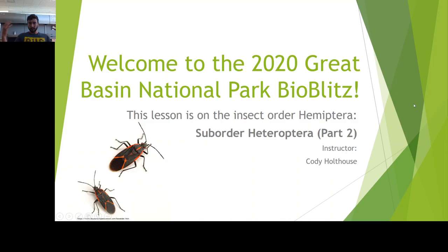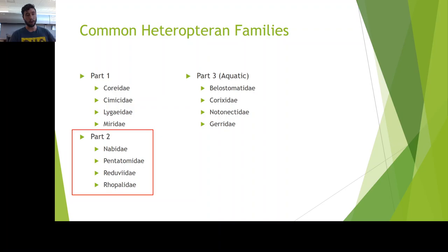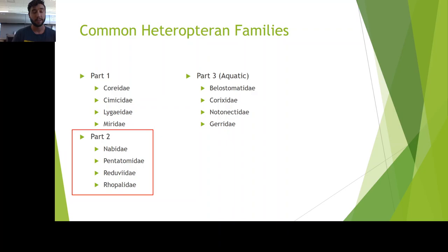Welcome back to the Great Basin National Park Bio Blitz — the bio blitz that gets to be in your backyard this year, along with those of us at the park who are collecting. Today we're going to talk a little more about Hemiptera, specifically the suborder Heteroptera. This is Part 2, so we're going over Nabidae through Rhopalidae — just four random families we think you might commonly encounter. There are many others, so go beyond these lists and discover more.